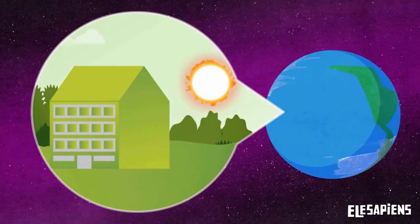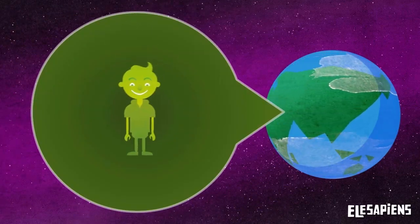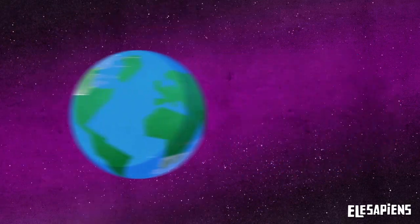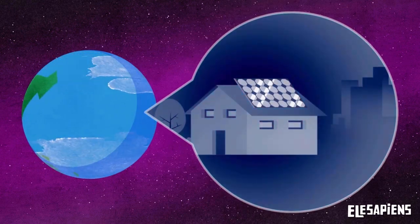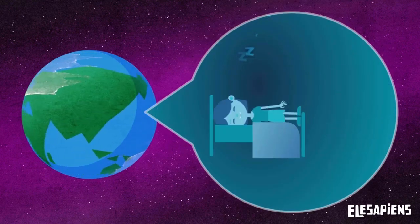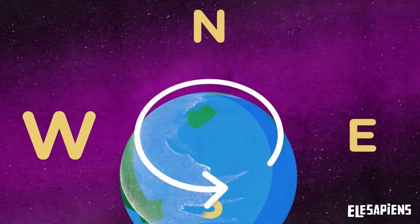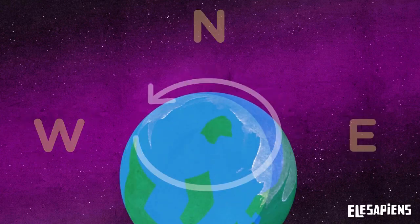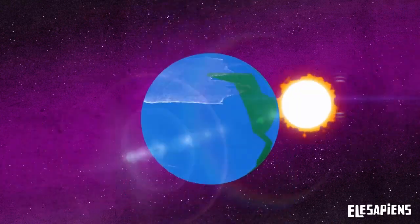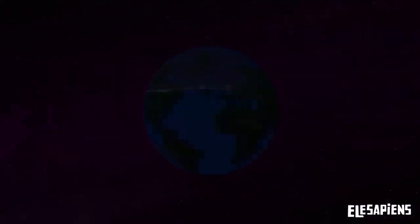It is daytime on the part of the Earth that receives the energy from the sun, while it is nighttime on the rest of the planet. The Earth always rotates from the west to the east. That is why we always see the sunrise on the east and the sunset on the west.